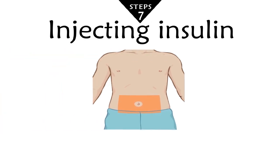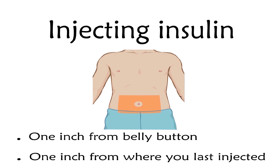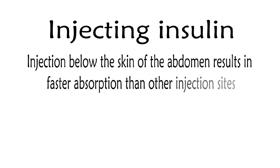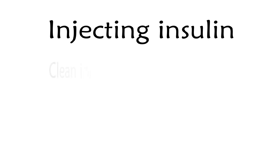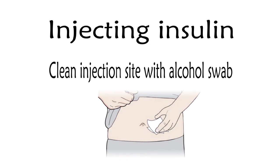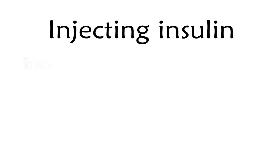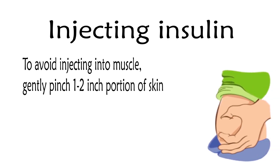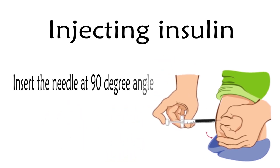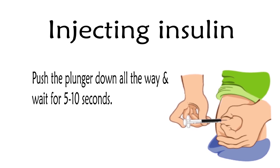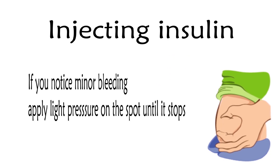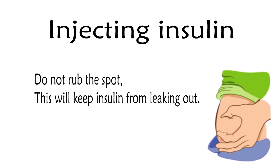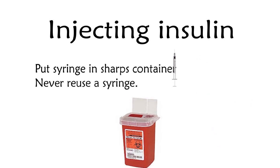Now you are ready to go. Pick a spot at least one inch from your belly button and at least one inch from where you last injected. Injection below the skin of the abdomen results in faster absorption than other injection sites such as the skin of the upper arms, thigh, or buttocks. Clean the injection site with an alcohol swab and allow the skin to dry for a few minutes. To avoid injection into muscle, gently pinch a 1 to 2 inch portion of skin. Insert the needle at a 90-degree angle. Push the plunger down all the way and wait for 5 to 10 seconds, then pull the needle straight out. If you notice minor bleeding, apply light pressure on the spot until it stops. Do not rub the spot — this will keep insulin from leaking out. Put the syringe in a sharps container. Never reuse a syringe. These are the steps involving injecting insulin using a syringe.